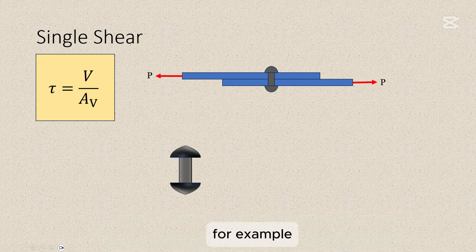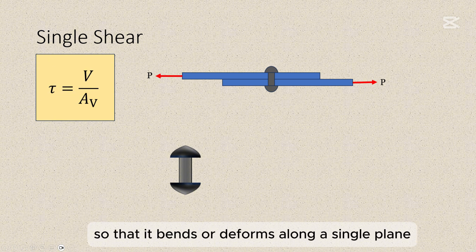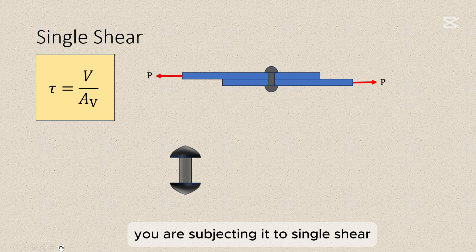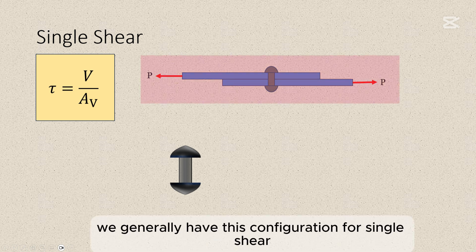For example, if you push or pull on one end of a rod or beam so that it bends or deforms along a single plane, you are subjecting it to single shear. And so here, we generally have this configuration for single shear.